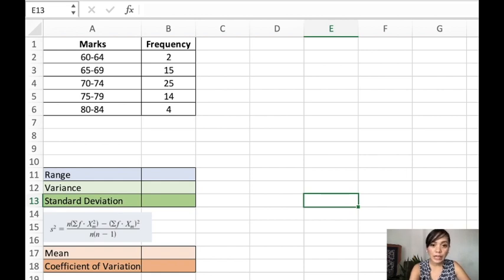Now let's solve for the measure of variation of a grouped frequency distribution table. So we have here the frequency and their marks. The first step is getting the midpoint. So I'll just insert something here.